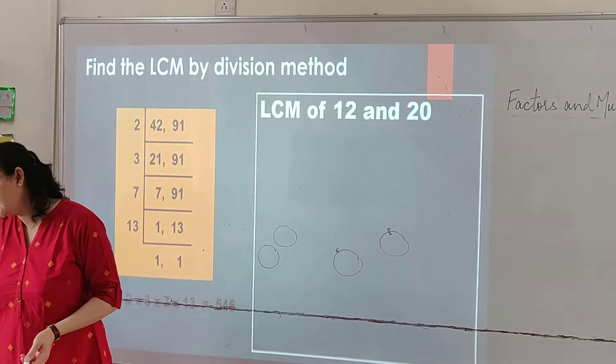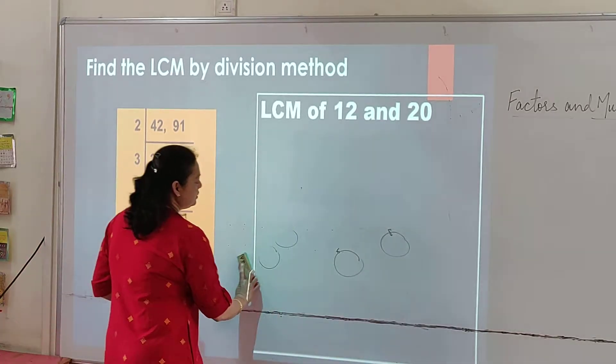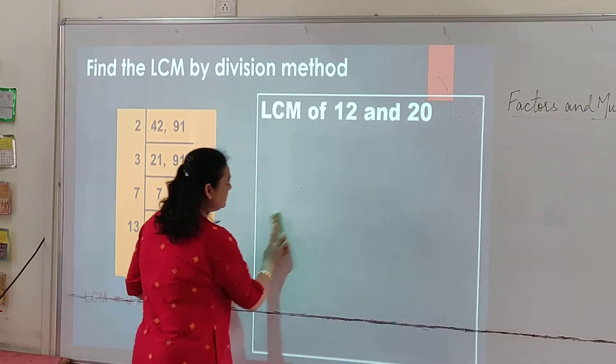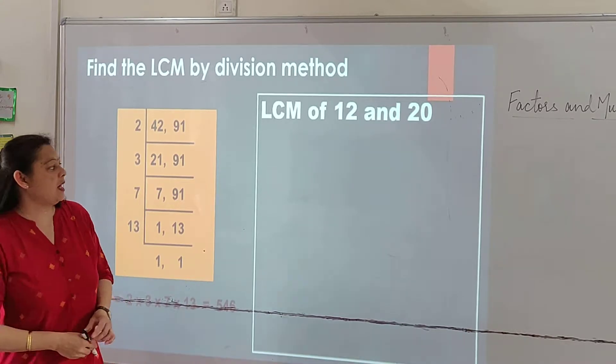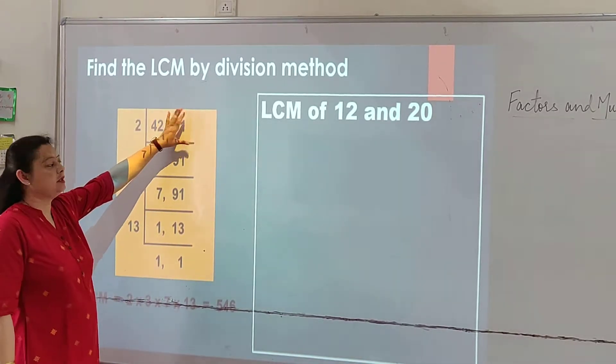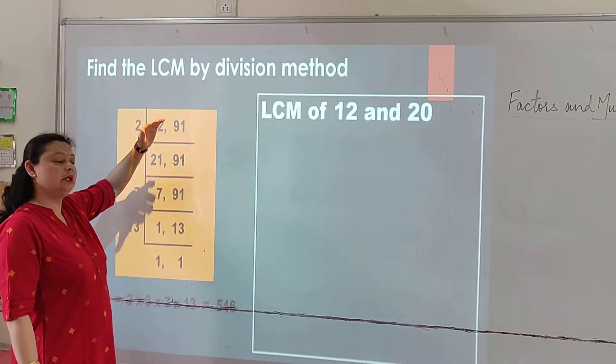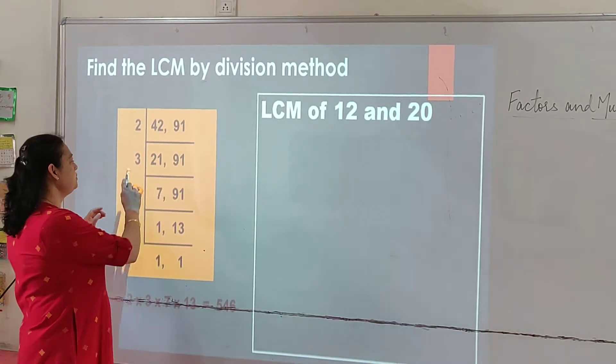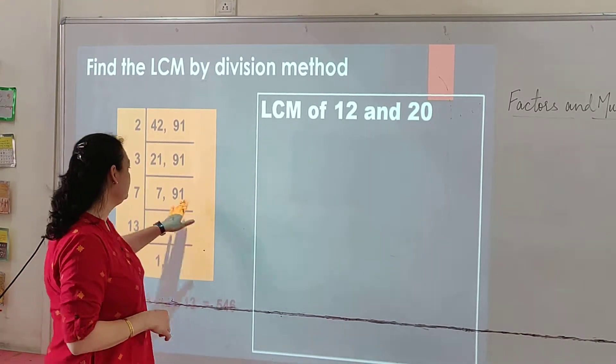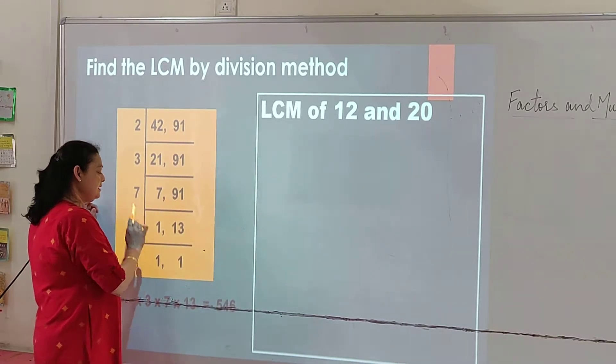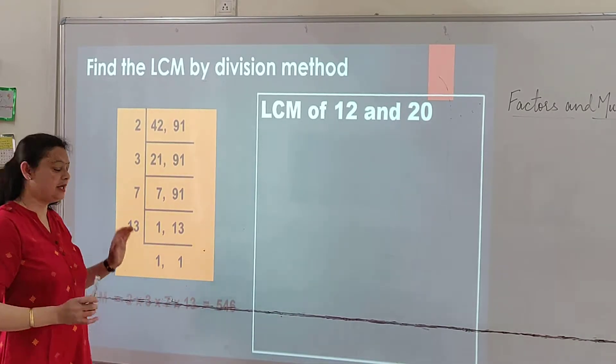Day 9, LCM. Children, you already know how to find out the common multiples. So now we will find out the LCM. LCM is least common multiple. This sum is done for you. This is 42 and 91. 2 times 21 is 42. 91 is not divisible by 2, so we will bring 91 down. Now 3 times 7 is 21. Again, 91 is not divisible by 3, so we will bring 91 down. Now we will divide it by 7. 7 times 1 is 7, and 7 times 13 is 91. 13 times 1 is 13. The sum finishes here.